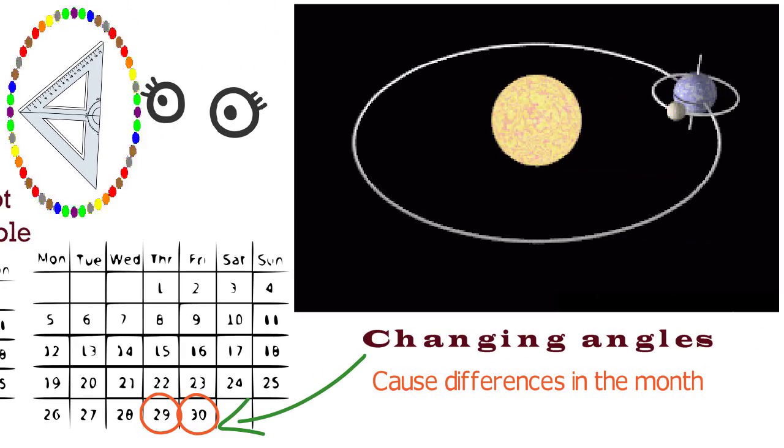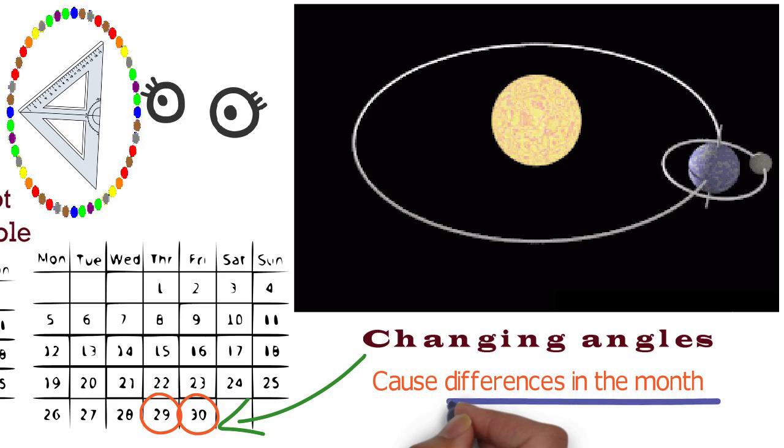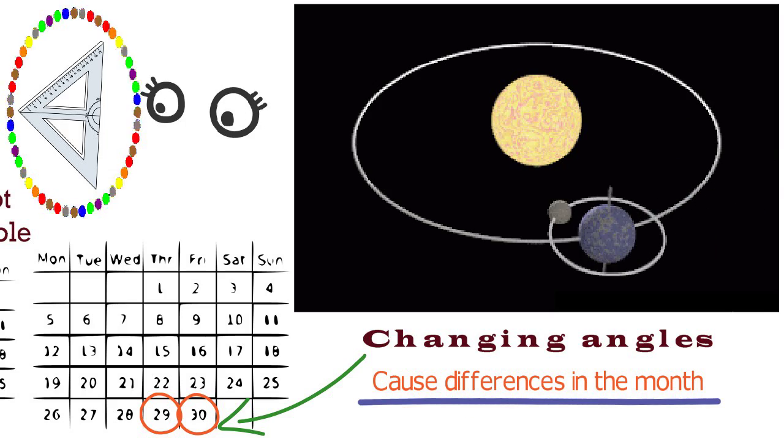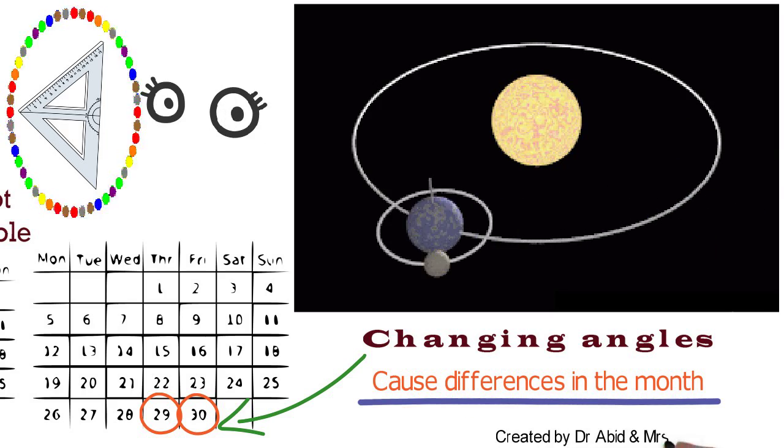So that is the difference why the months vary and why sometimes the moon is sighted and sometimes not.